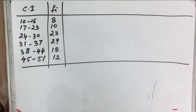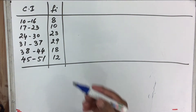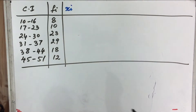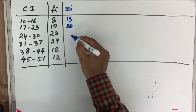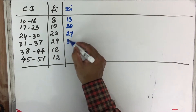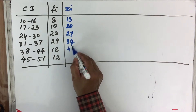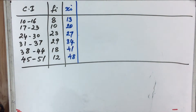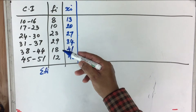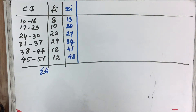Remember, we do not have an XI value directly because it is a continuous distribution. Therefore, as seen in earlier examples, the XI value is going to be the mid value. The mid values are: 13, 20, 27, 34, 41, and 48. We also calculate the summation of all FI values: 8 + 10 + 23 + 29 + 18 + 12, which equals a perfect 100.